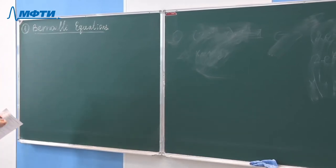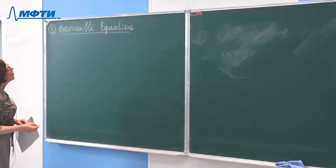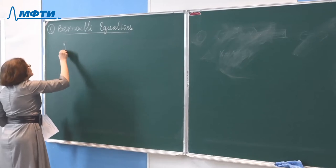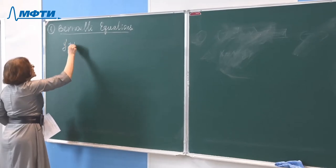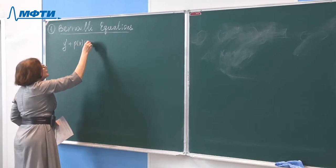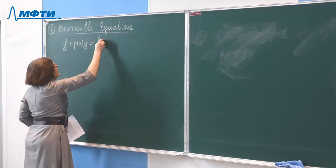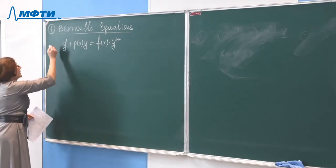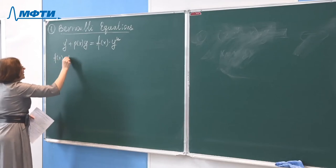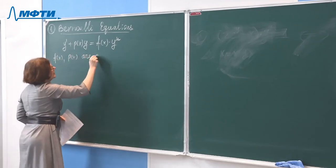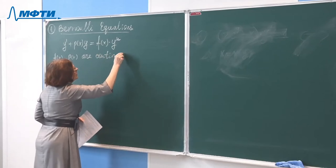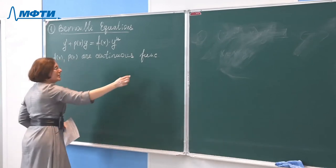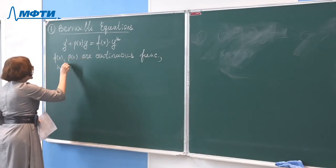Bernoulli equations have the form: Y-prime plus P(x) times Y equals F(x) times Y raised to the power N, where F(x) and P(x) are continuous functions and N is a real number.